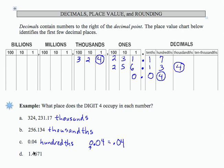The last number, 1 and 4,671 ten-thousandths, we can place in the table as 1 decimal point, 4,671 and we're going to circle the 4 and the 4 in this case is in the tenths place.